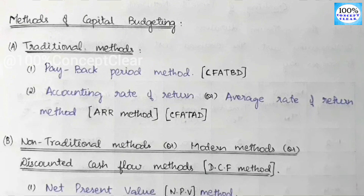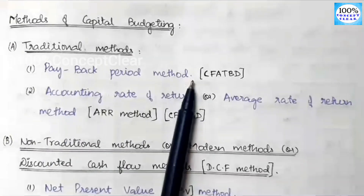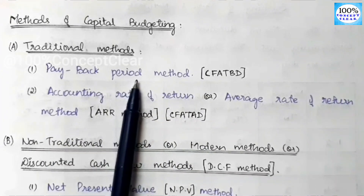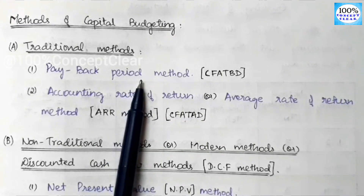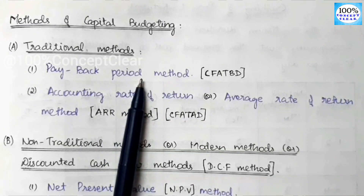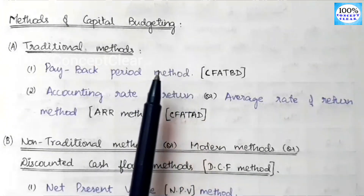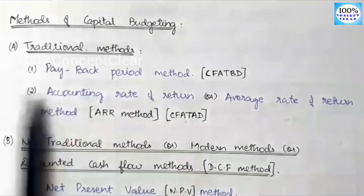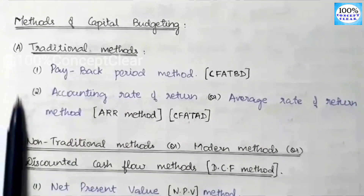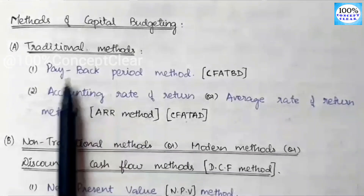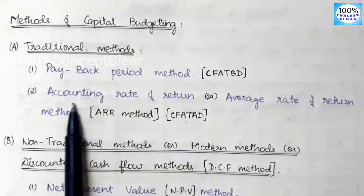We are looking at capital budgeting. In this case, we are looking at the theory part — the objectives, importance, and factors influencing capital expenditure decisions, then methods. We cover theory parts, then traditional methods: payback period and ARR.